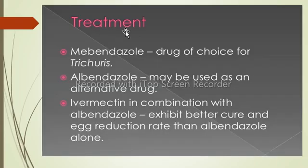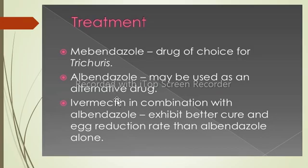For treatment of Trichuris trichiura infection, the drug of choice is mebendazole. Alternative drugs can also be used. The highest clearance rates are obtained by combining mebendazole and albendazole with ivermectin. This combination therapy exhibits better cure rates and egg reduction. Iron supplements can also be used for microcytic anemia.